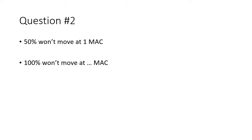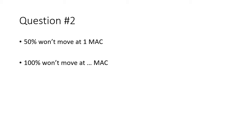Here's another question. We know that 50% of the population won't move at one MAC, but that isn't much good to us. How much anaesthetic does it take to stop 100% of the population from moving? The standard deviation for MAC is 10%, and so almost nobody will move at 1.3 MAC. All the action happens across a very narrow range of concentrations.